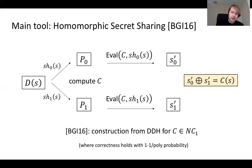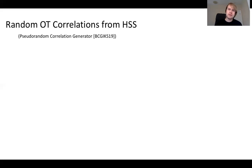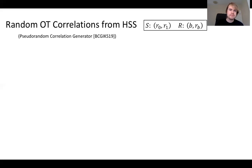This inverse polynomial error usually has to be dealt with in applications of HSS. Now, recall that we want to allow parties to generate a huge number of OT correlations, and we're going to show how to do this from HSS. Another name for what we're doing is constructing a pseudorandom correlation generator, as introduced in work by Boyle et al.